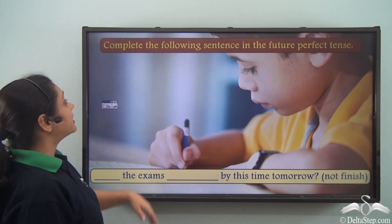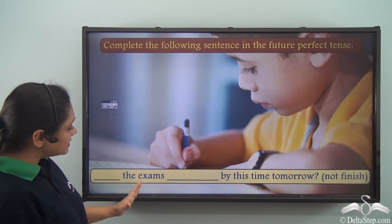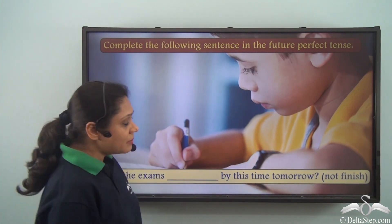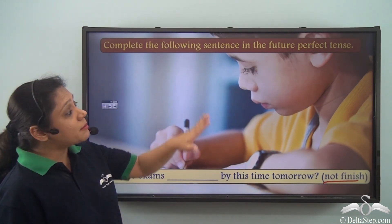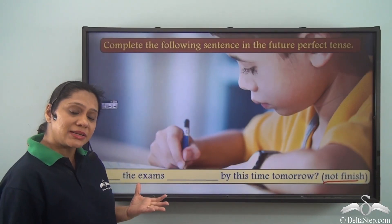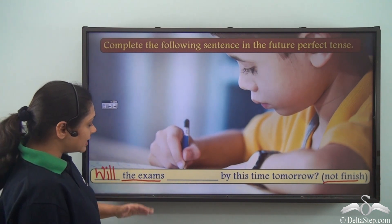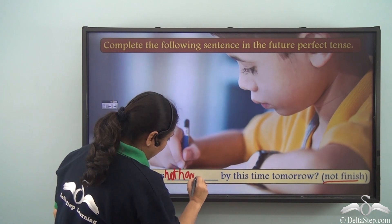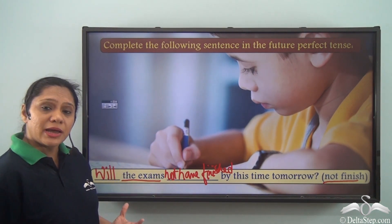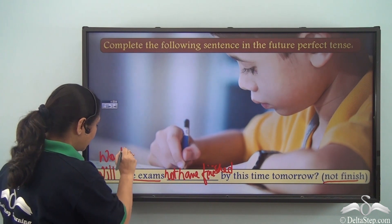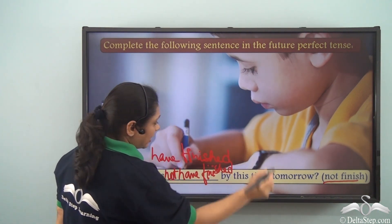Now let us do this exercise. Complete the following sentence in the future perfect tense. The sentence is: Dash the exams dash by this time tomorrow, with the verb 'not finish'. This has to be a negative interrogative sentence portraying the future perfect tense. It will be: Will the exams not have finished by this time tomorrow? Or we can write the contracted form: Won't the exams have finished by this time tomorrow?